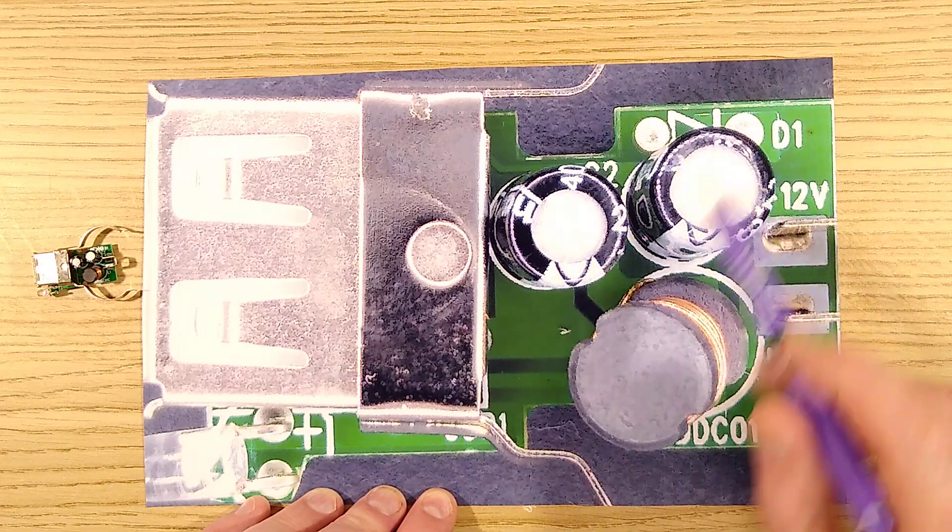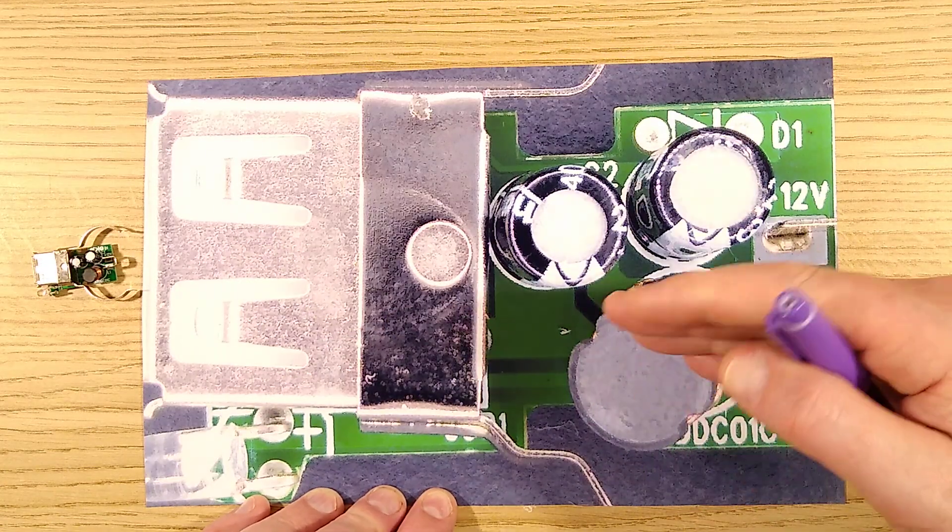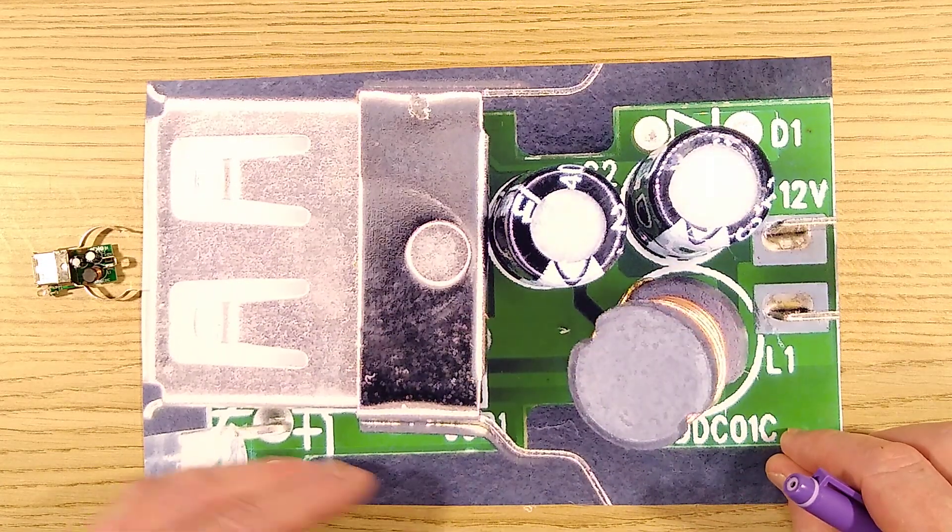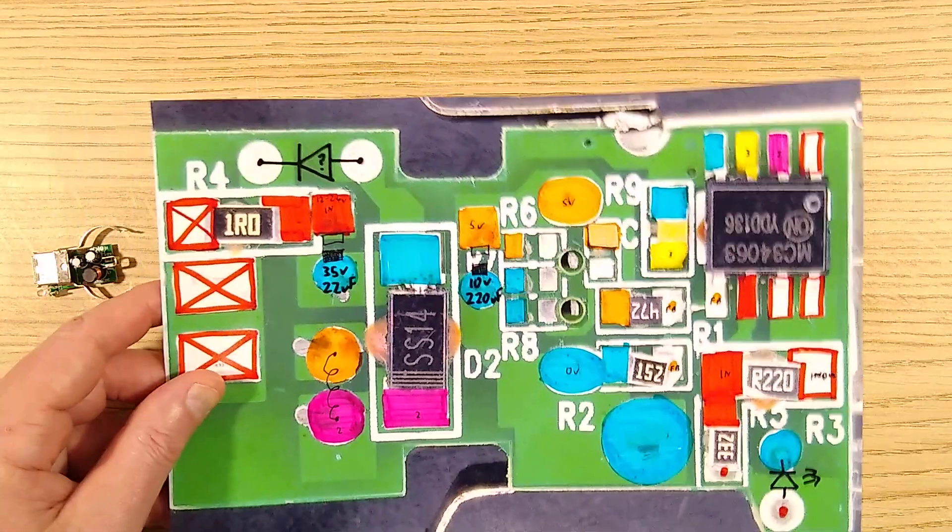There's two capacitors and there's an inductor. This is the input capacitor with 12 volt supply coming in, this is the 5 volt output capacitor, and this little inductor here is used to actually help it drop the voltage from 12 to 5 volts in a pulsed manner.